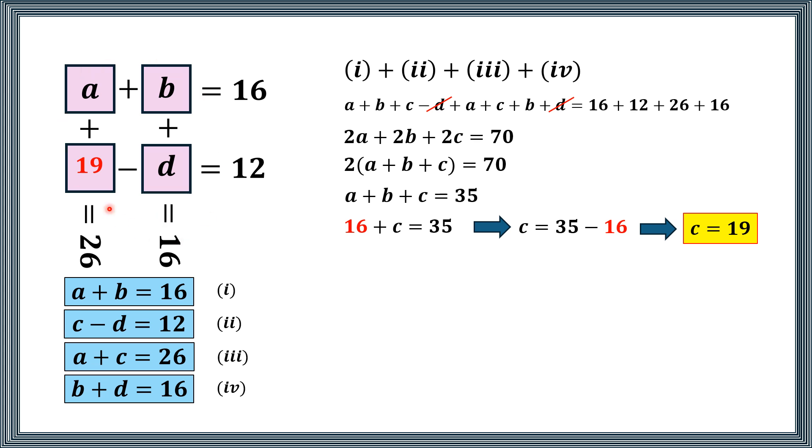Now we have very easy task to solve all the equations. So from this, 19 minus d is equal to 12, and if we calculate d from here, after simplification we will get d is equal to 7. So we replace d by 7 over here.